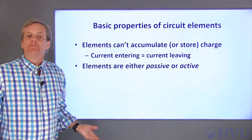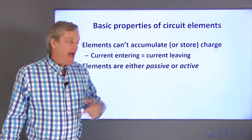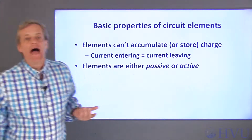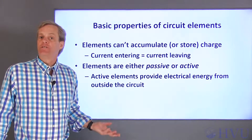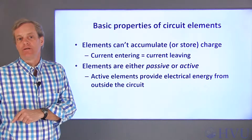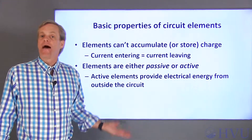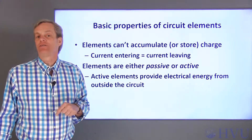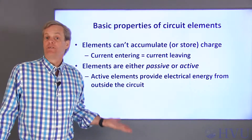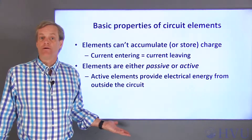Circuit elements can be divided into two basic types: active elements and passive elements. Active elements provide energy to a circuit from a source that's external to the circuit. For example, a battery performs a chemical reaction to create electrical energy. From the standpoint of the electrical circuit, the energy appears out of nowhere.